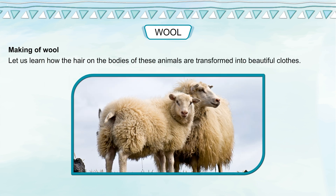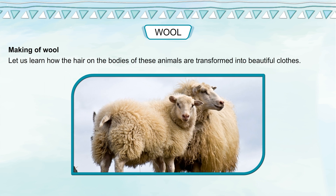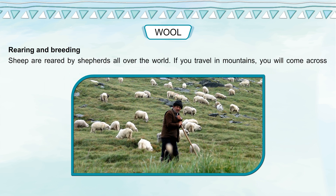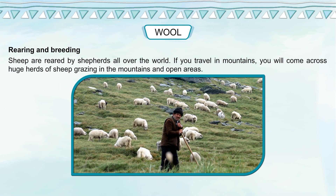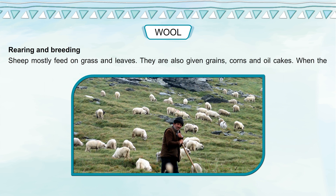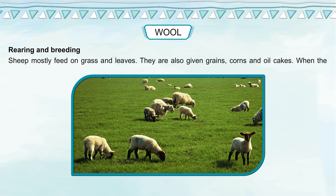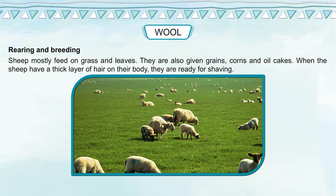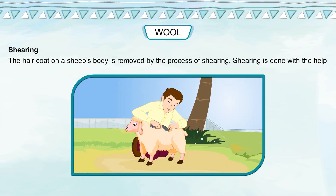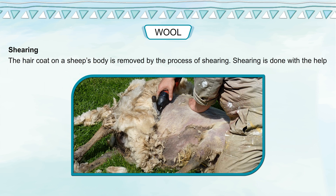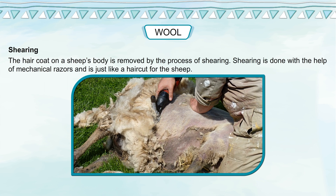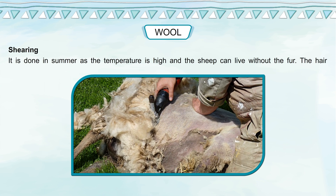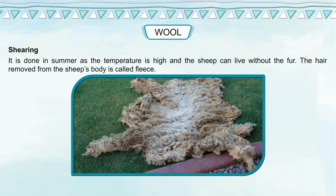Let us learn how the hair on the bodies of these animals is transformed into beautiful clothes. Sheep are reared by shepherds all over the world, feeding mostly on grass, leaves, grains, corn and oil cakes. When the sheep have a thick layer of hair on their body, they are ready for shearing. Shearing is the removal of the hair coat using mechanical razors — just like a haircut for the sheep. It is done in summer when the temperature is high and the sheep can live without the fur. The hair removed from the sheep's body is called fleece.